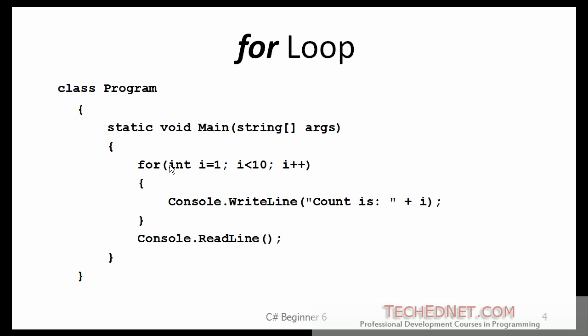Let us look at the FOR loop. The FOR loop has three parts. The first part is called the initializer. The second part is the termination condition. And the third part is the increment, which could also be a decrement.